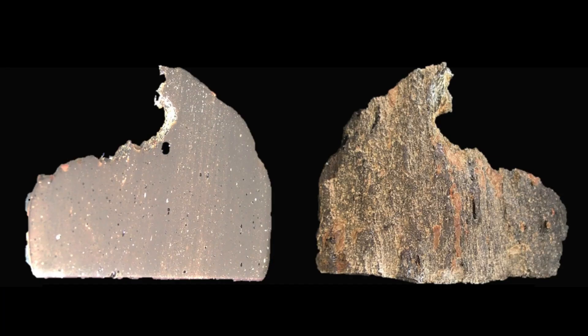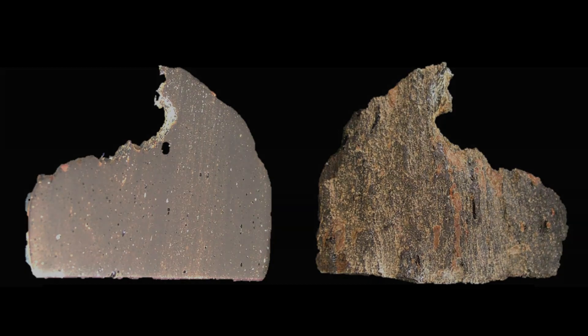The polished and unpolished sides of Muang Nong tektite number 461, showing light and dark layers, double-tipped bubbles, and froth.